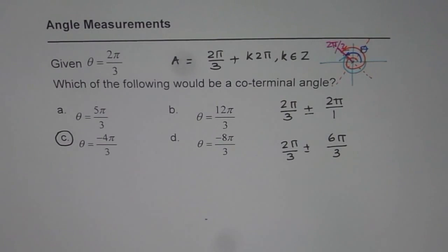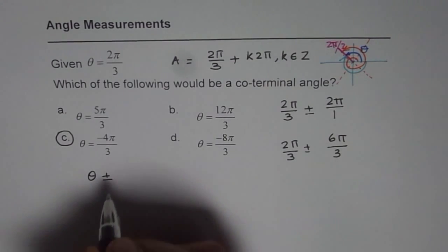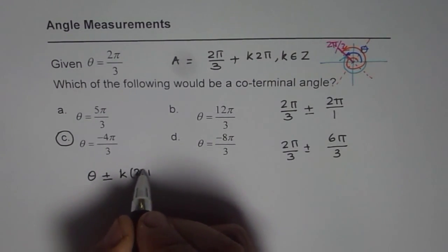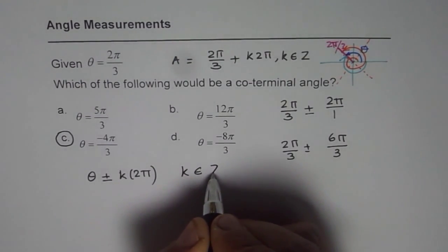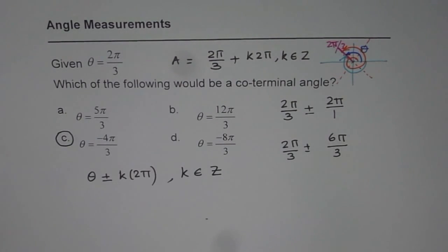I went slow so that you can understand the concept. Whenever we talk about co-terminal angles, the co-terminal angle is theta plus or minus k times 2π, where k belongs to the set of integers: ±1, ±2, ±3, and so on. I hope that helps you understand co-terminal angles and how to easily find the right choice from multiple choice questions. Thank you.